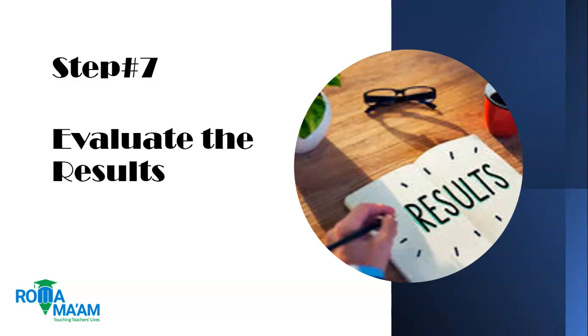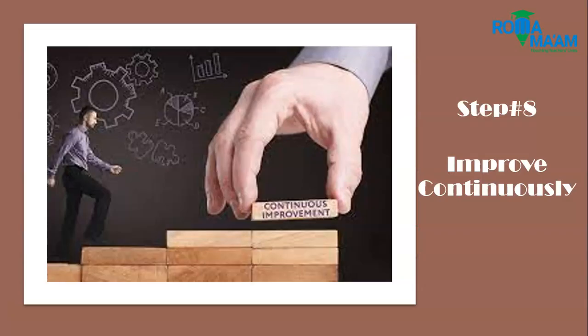Step number seven is to evaluate the result. Now you've done everything it takes to find the answer to your problem — check what the end result is. Have you actually solved the problem with your action plan, or is there something you still need to work on? This evaluation will give you an answer. And step number eight: once you've seen results, you keep on improving until you reach a stage where the problem just disappears.